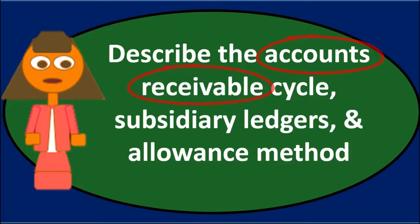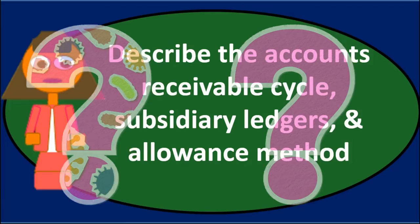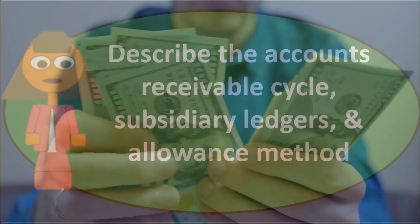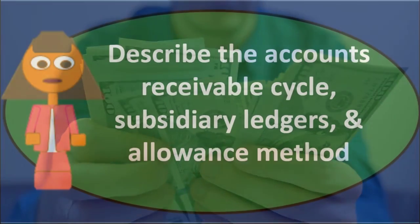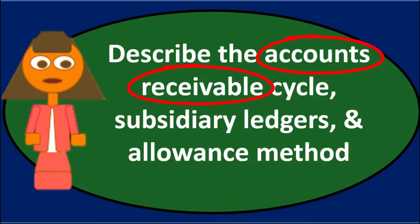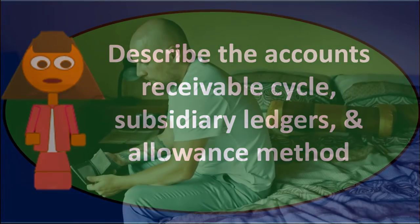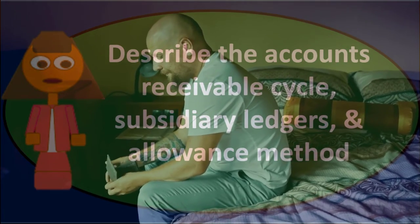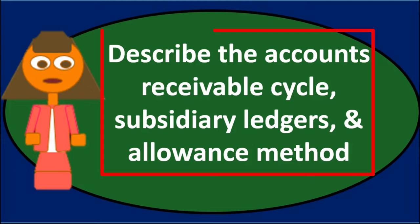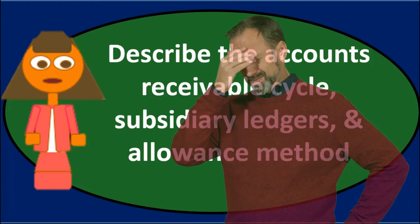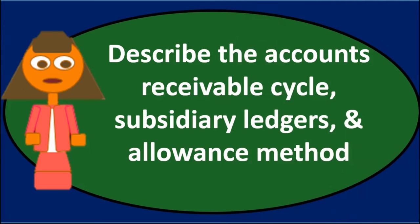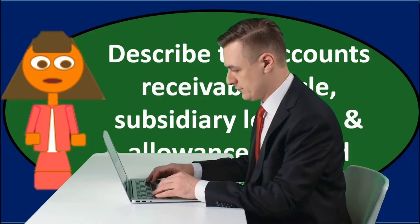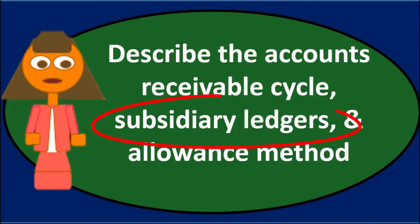So then we can go into the problems with accounts receivable. One of them is: how do we value accounts receivable? Isn't it the case that we might not get cash? We are claiming we have something of value — a promise to pay us — but it is the case that we might not get paid, and we might have some knowledge about how many of those accounts will not be paid. That's one problem we'll deal with using the allowance method under generally accepted accounting principles. The other problem is how do we track who's going to pay us in order to send invoices and ensure we get payment — that has to do with tracking receivables by customer, typically done with a subsidiary ledger.